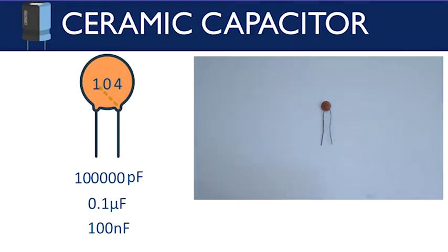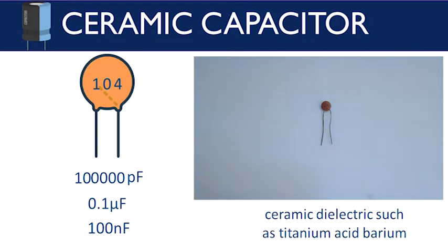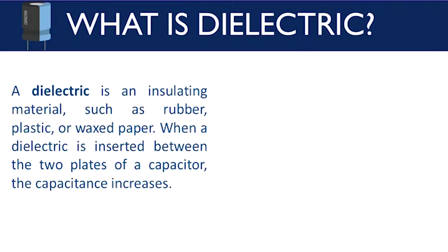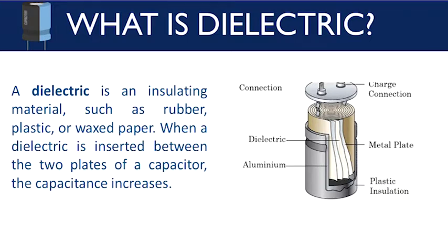A ceramic capacitor uses a ceramic dielectric such as titanium acid barium — that's why it is called a ceramic capacitor. Most types of capacitors were named based on the dielectric used in their construction. A dielectric is an insulating material such as rubber, plastic, or wax paper. When a dielectric is inserted between the two plates of a capacitor, the capacitance increases.